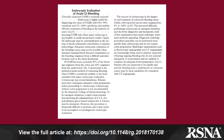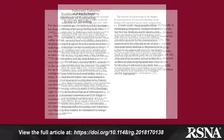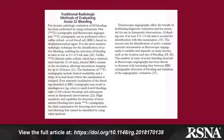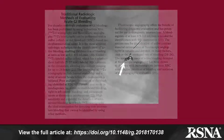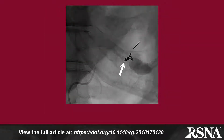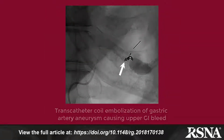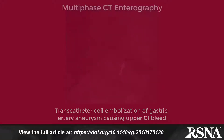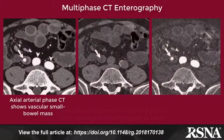Following a brief discussion of traditional imaging methods of evaluation for acute GI bleeding — namely technetium-99M scintigraphy and standard catheter angiography — the paper focuses on the use of CT in the acutely bleeding patient.